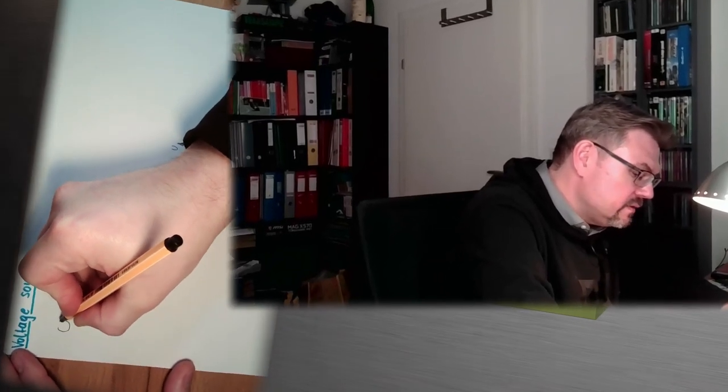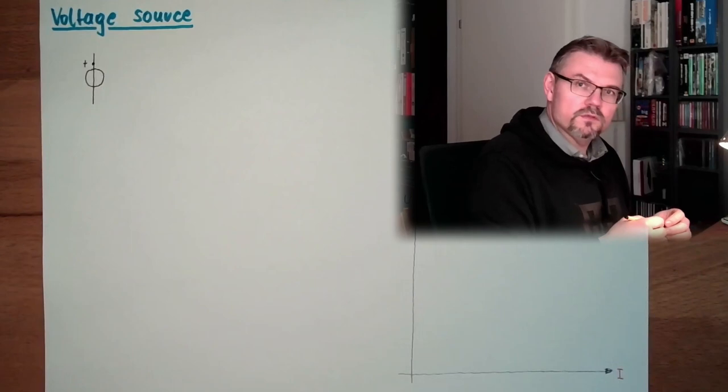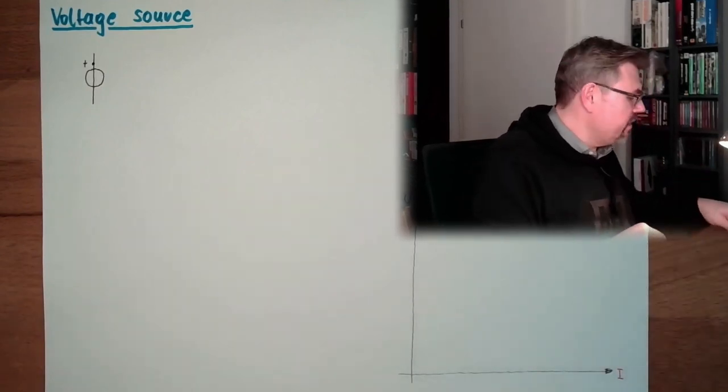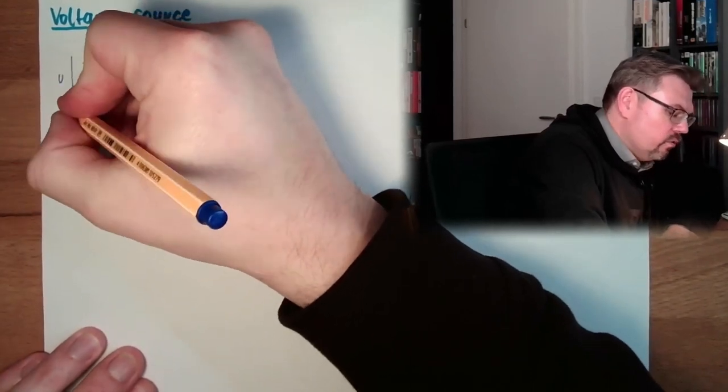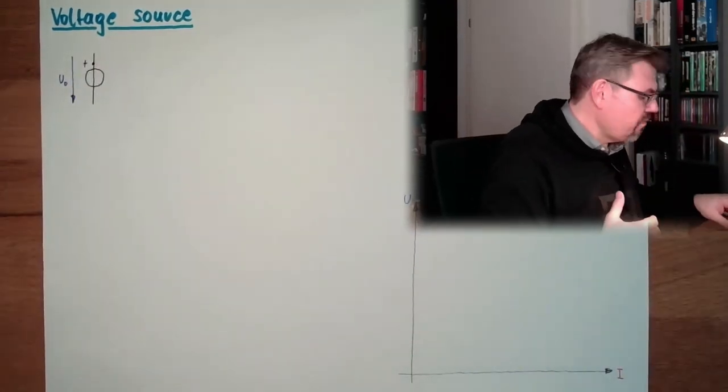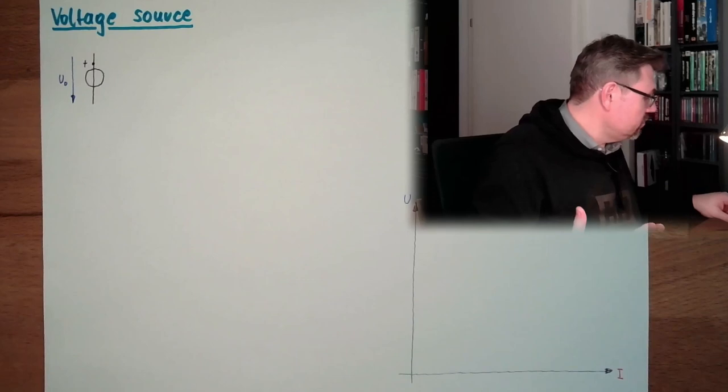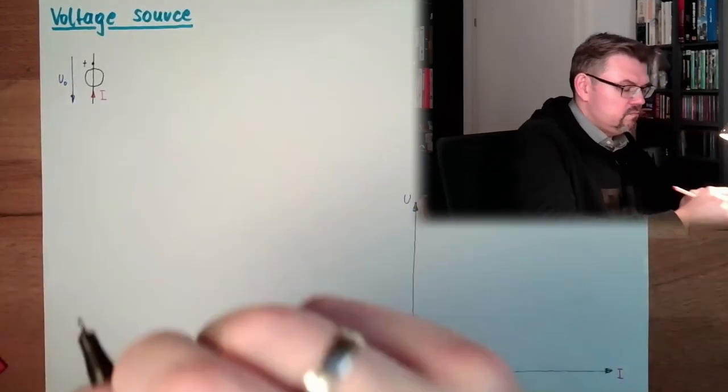Voltage source. What is a voltage source? Well, the symbol of a voltage source in a circuit plane would look like this. So maybe a dot here and a plus or something like this. This is a voltage source, an ideal voltage source. And this voltage source has a voltage, U0, source voltage. And there might be current rushing through this voltage source.